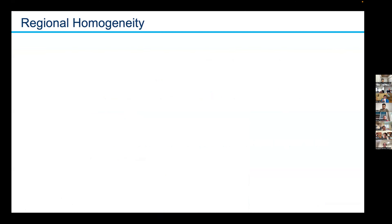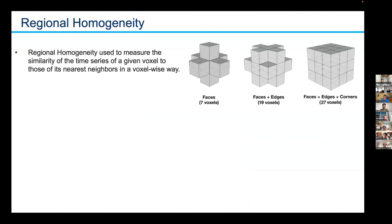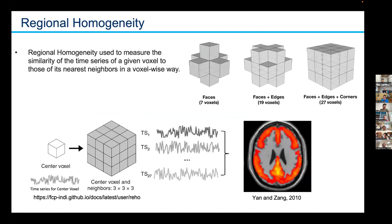To start with, regional homogeneity, from the fMRI literature, is a measure that ranks the similarity between neighboring voxels given faces, edges, or corners. If you have a center voxel, it's purely Cartesian and free of anatomical constraints — you just extract the neighboring voxels, see how similar they are, and based on that, color code the fMRI data.